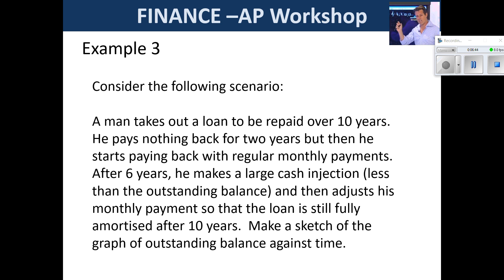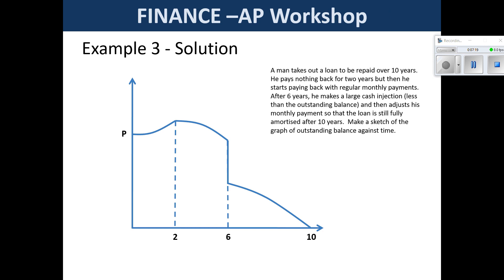Example three tests your understanding of an annuity. A man takes out a loan to be repaid over 10 years. He pays nothing for the first two years, then starts paying a regular monthly payment which begins bringing the balance down. After six years, he makes a large cash injection to reduce the balance, then adjusts his monthly payment so the loan is still paid over 10 years. We need to make a sketch — the examiner wants to see exponential growth of the loan during the first two years since no payment was made.